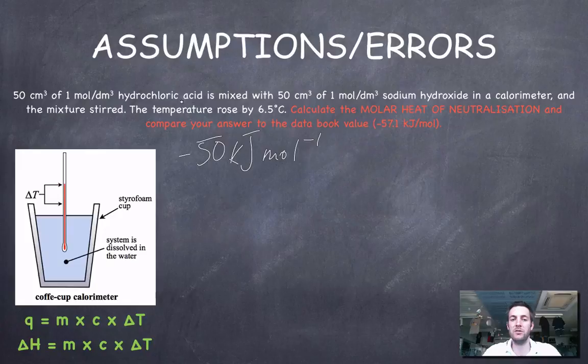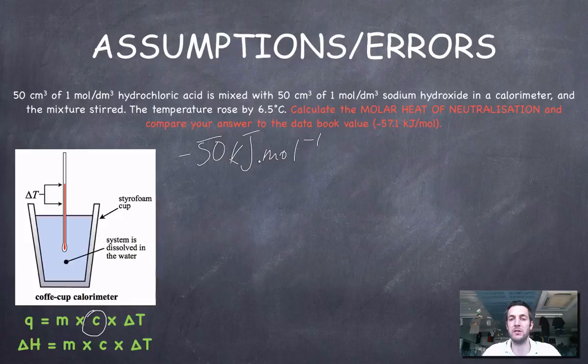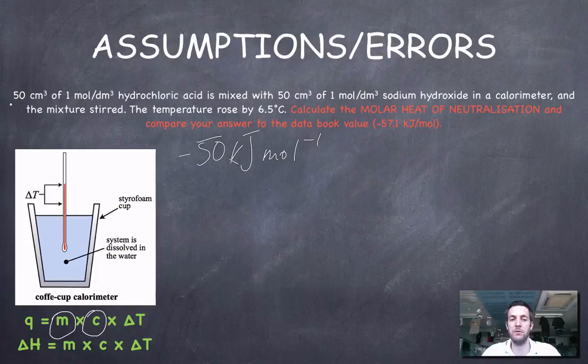What other assumptions did we make? Remember at the start, we said that these two solutions would behave just like water. In other words, we've assumed that the specific heat capacity of hydrochloric acid and sodium hydroxide solutions is the same as that of water. So when we used 4.18 here, we made an assumption which isn't going to be quite right. Any difference is going to account for some difference in our values. We also assumed that the density of these solutions was the same as water because we assumed the mass here is the sum of 50 plus 50, as if these were just pure water. And that's also not going to be quite right.